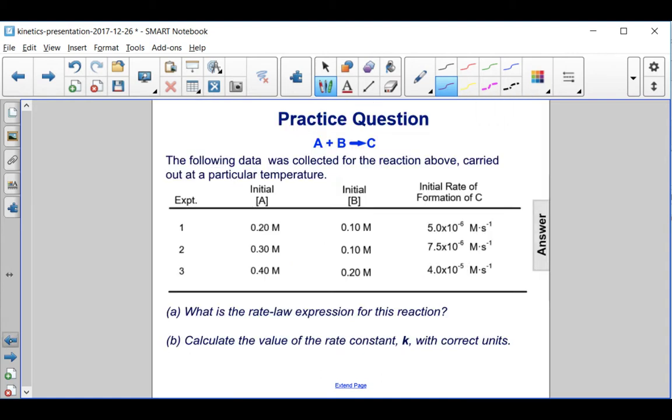I'm going to go back and remember I'm first order with respect to A, second order with respect to B, and I'm going to write my rate law expression where the rate is equal to K times A times B to the second power.